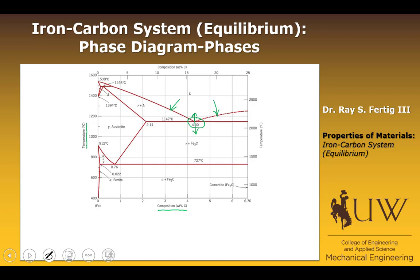Looking at some other features: up at the top in this delta phase, we can see that this phase is actually going to be delta plus liquid. Cooling down, we can go from delta plus liquid into the gamma phase, so that would be a peritectic reaction. Then we can observe another reaction further down — this would be eutectic, and this would be peritectic.